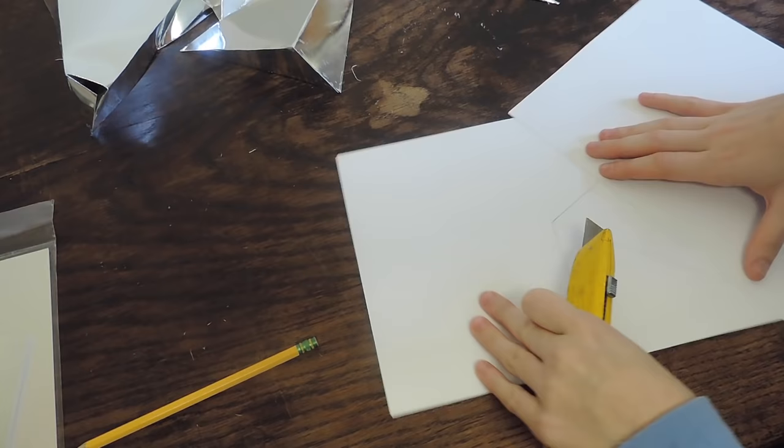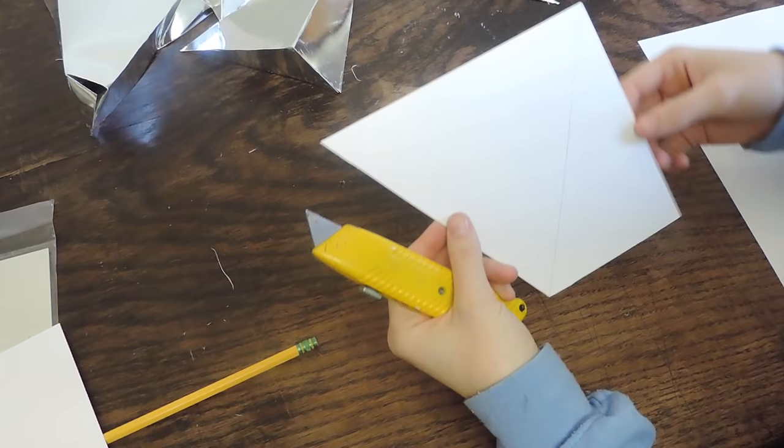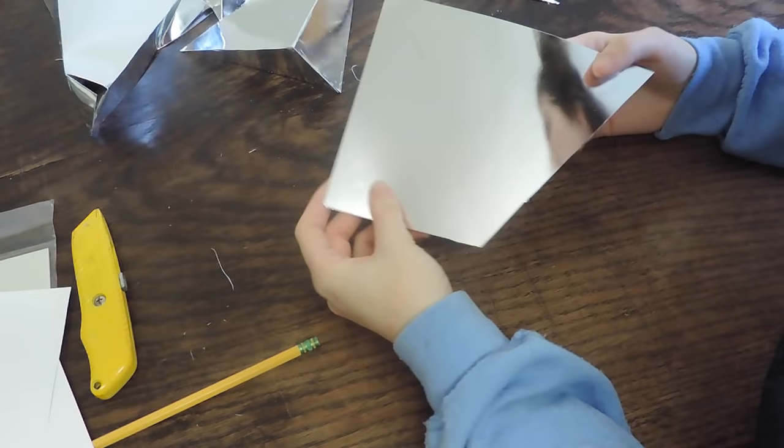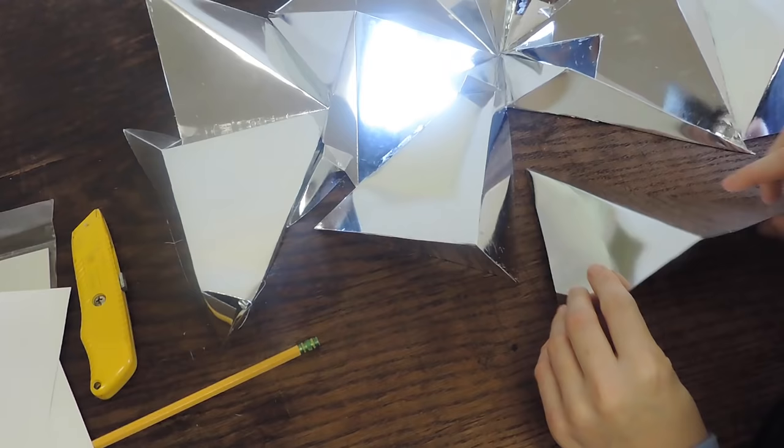And then once you pull that out you're going to take your scalpel and you're not going to fully cut the middle piece. You're going to score it so you're not cutting through it. You're just going to make it so it has a little crease in it so you can bend it easily like that.